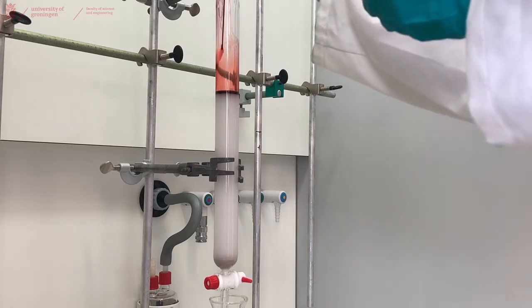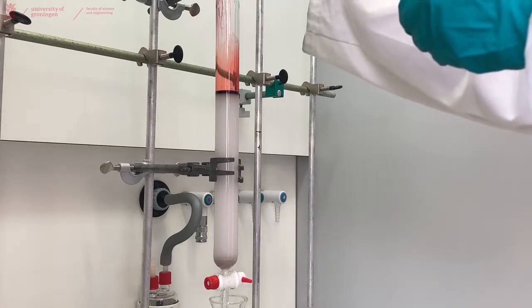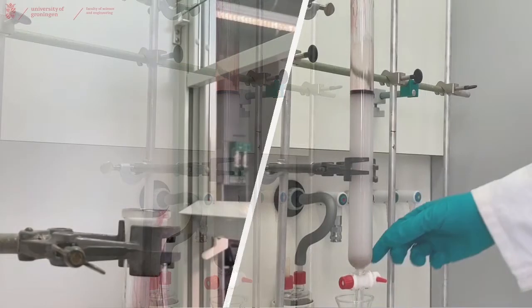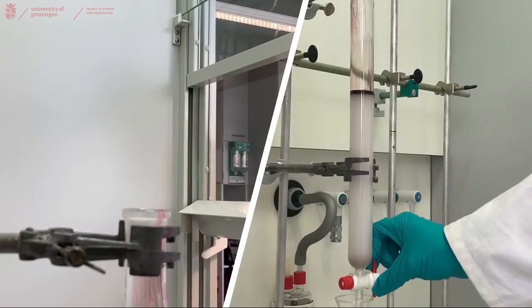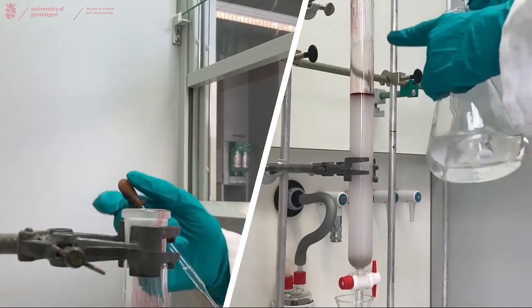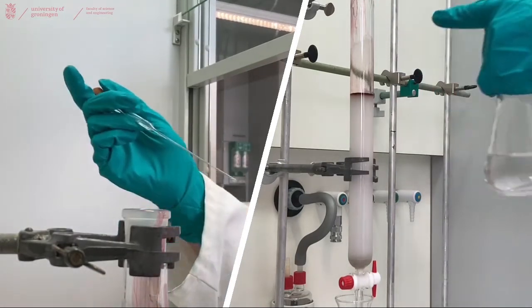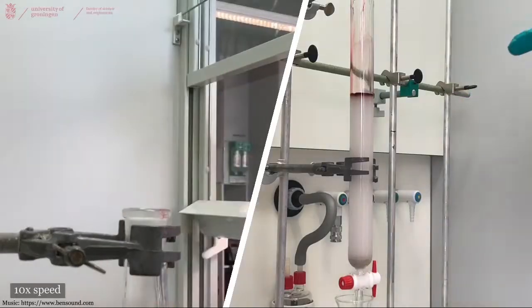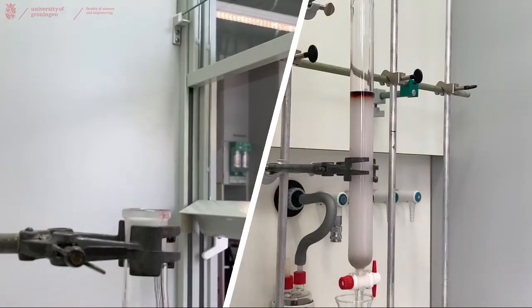Now that we placed our compound dissolved in a minimum amount of eluent on top of our column, we can open it and let it run into the silica. And while it's almost in, you can rinse the sides of the column with a tiny bit of eluent. And also let that extra bit of eluent flow into your column.